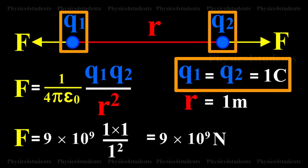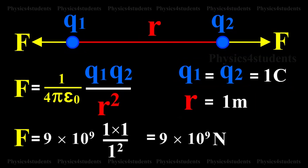1 Coulomb is defined as the quantity of charge which, when placed at a distance of 1 m in air or vacuum from an equal and similar charge, experiences a repulsive force of 9 into 10 raised to 9 Nm.